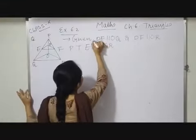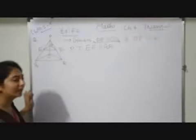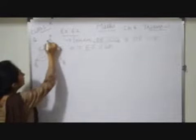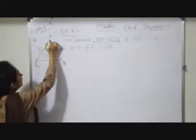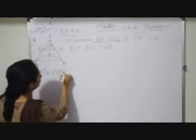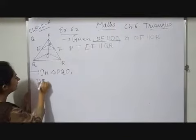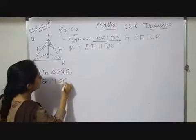Now, what can we do? First of all, what is given that we have to use? DE parallel OQ — this part is given. We need to determine which triangle to use. Since DE parallel OQ, I will take triangle PQO. So in triangle PQO, it is given that DE parallel OQ.